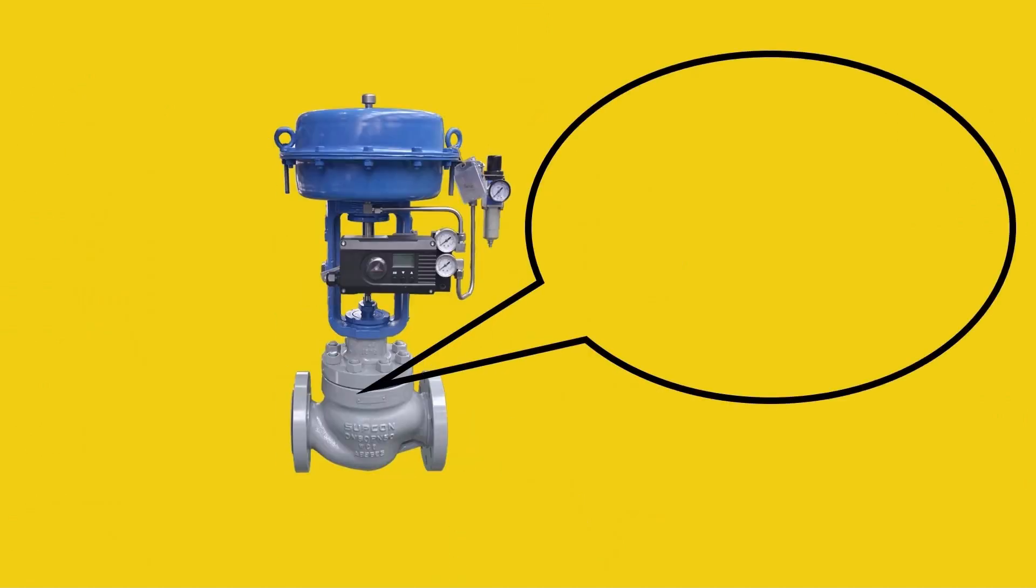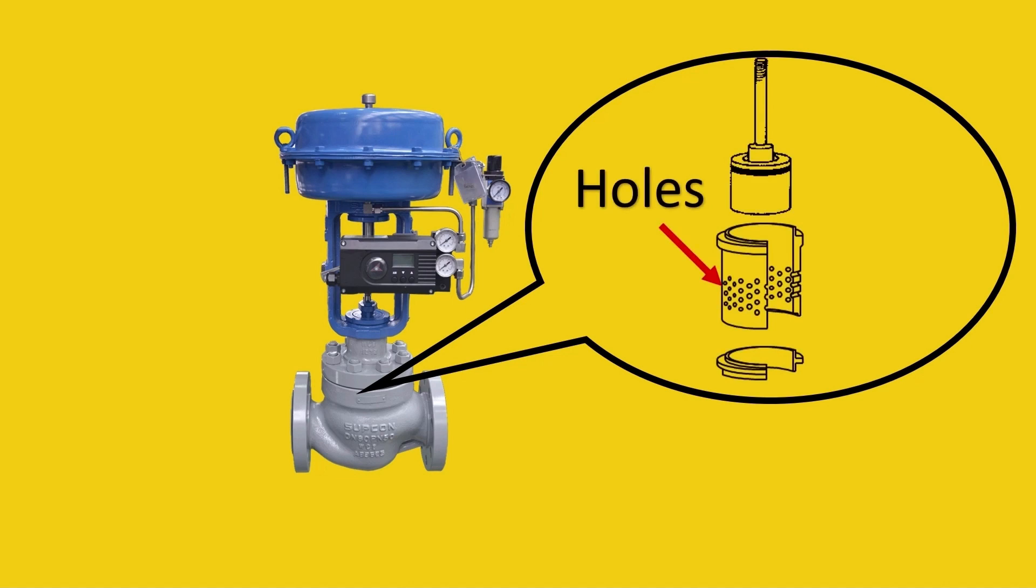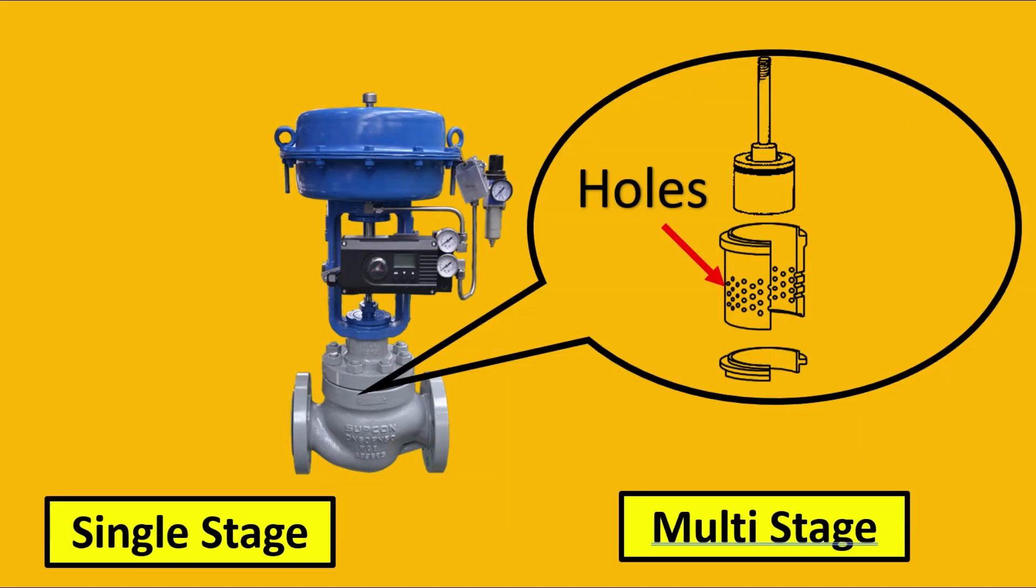There are some special kind of valves that are made. What they do inside the valve is in the trim, they make holes into it, so that the pressure drop will happen eventually. And then something was born which is called a single stage trim and multi-stage trim. Depending upon how severe is the cavitation, we either have single stage trim or multi-stage trim.